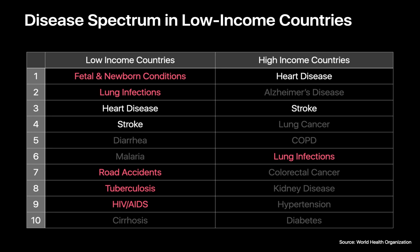Looking at all of these statistics, we learn two things. First, the spectrum of disease in low-income countries is different than in high-income countries — fetal and newborn conditions, infectious diseases, road accidents, and HIV-AIDS are, relatively speaking, amongst the leading causes of morbidity and mortality. Second, the overall disease burden is higher across the board in low-income countries. While heart disease may kill 79 per 100,000 people in the United States where it's the top cause of death, heart disease kills two and a half times more people per 100,000 in a country like Nigeria, where it's not even the top cause of death.